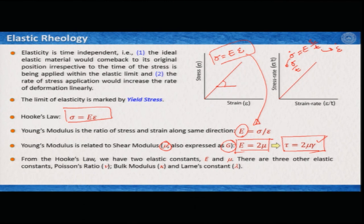From these, we have already found two constants: Young's modulus and shear modulus. However, from Hooke's law we can also get three other elastic constants: Poisson's ratio, bulk modulus, and Lame's constant. In some textbooks, mu and lambda together are referred to as Lame's constants. Poisson's ratio is generally referred to by the Greek letter nu, and bulk modulus by the Greek letter kappa.